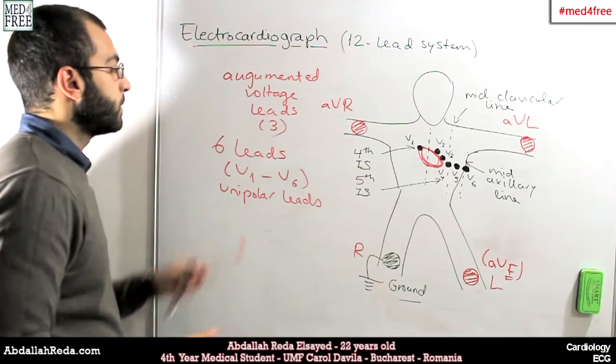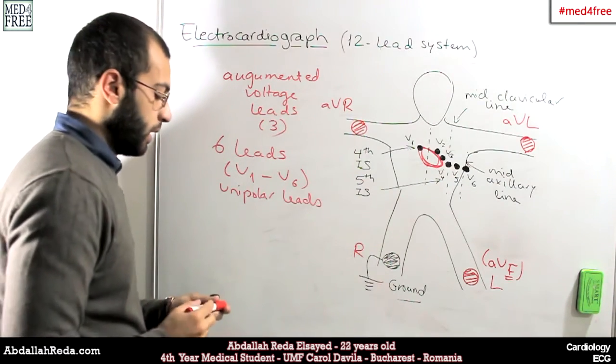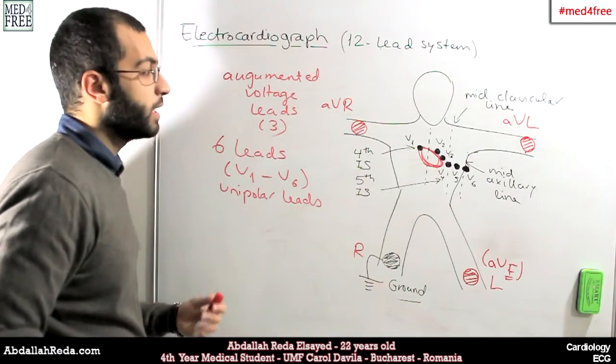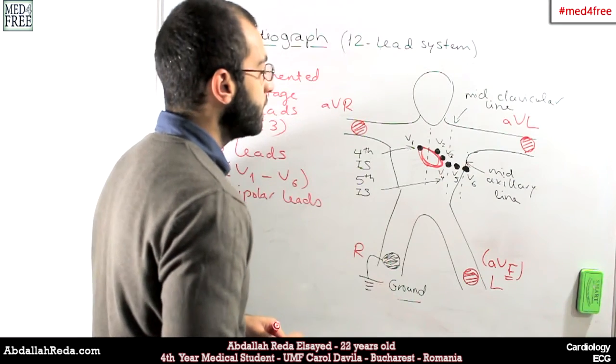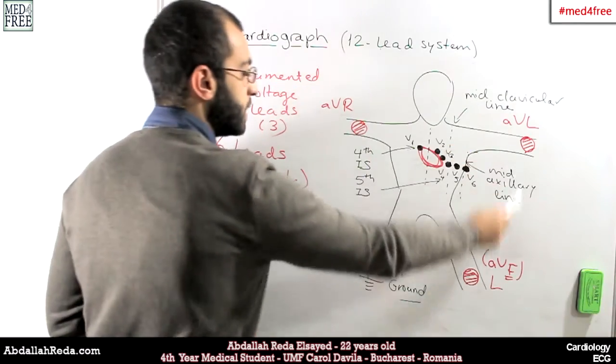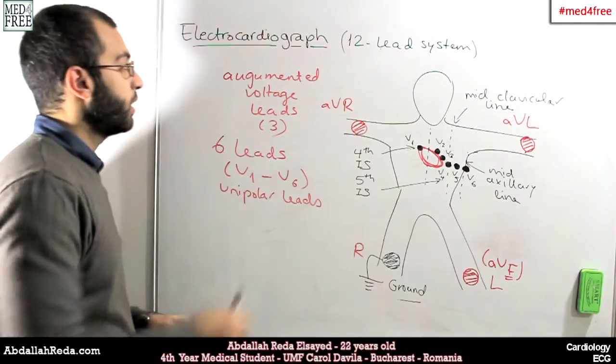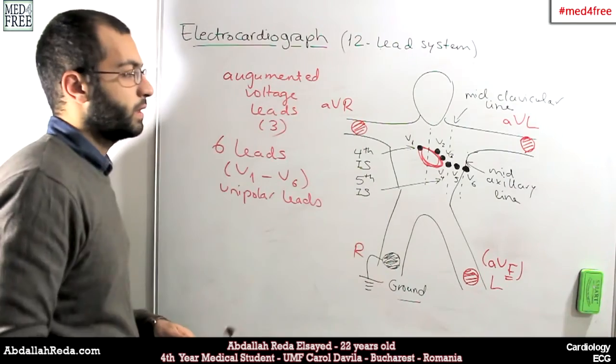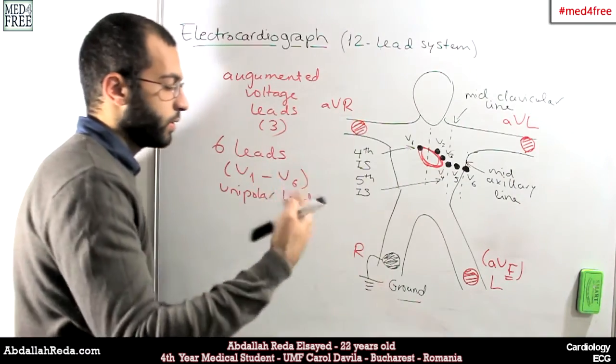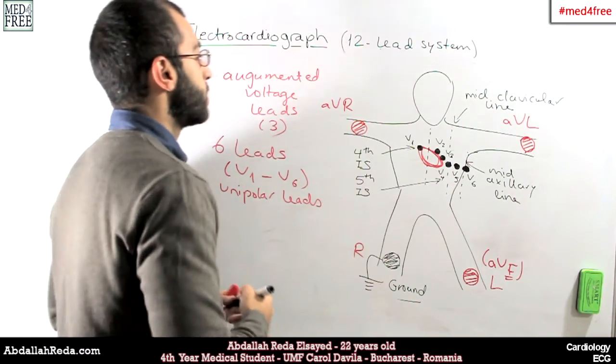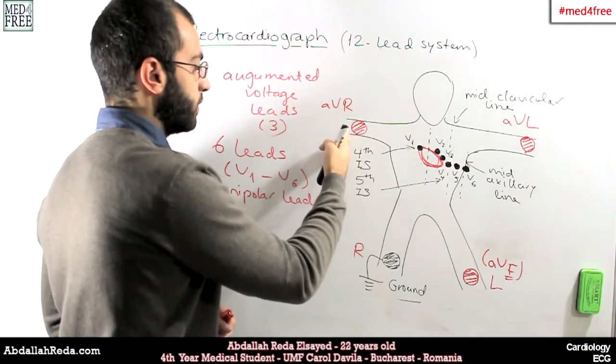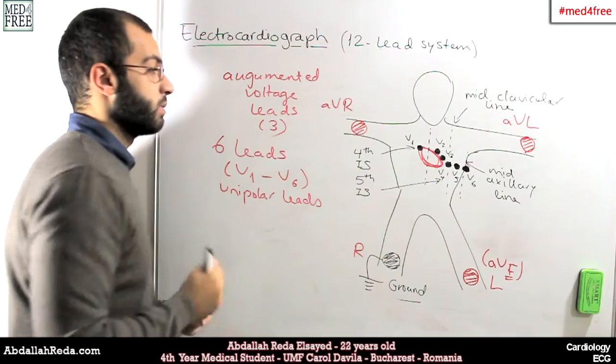So this sums up to nine leads. Where are the other three? Well, the other three leads are not quite real leads. They are virtual leads, and they result from the summation of the augmented voltage leads that we have. By the way, augmented voltage means that the voltage of the leads is increased by the device that measures the electrocardiac activity. This is why it's called augmented, because it's not supplying itself with a voltage, but the voltage is being increased by the device itself.